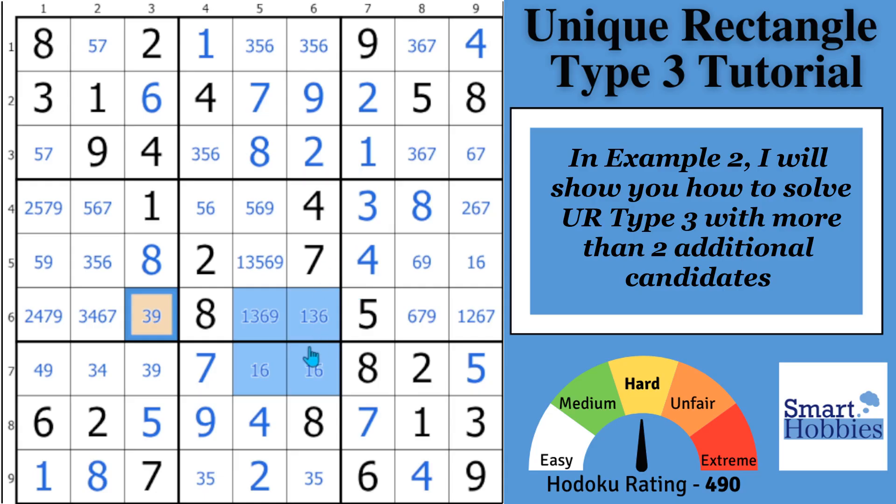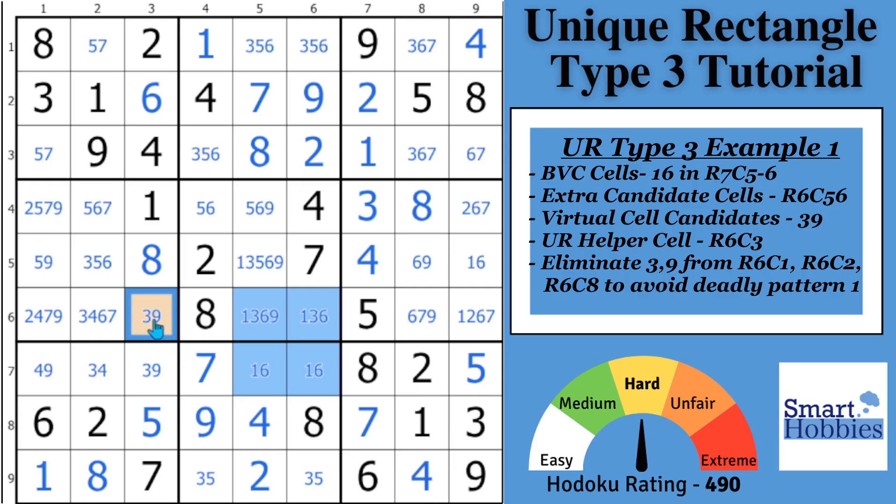In my next example, I will help you work through an example where there are more than two additional candidates. It's a little bit more complicated. Now, how do you make eliminations? You're going to remove a 3-9 from any cell in the same house as these three cells. In this case, this is row 6. Because you know one of the 3-9 has to be here, one of the 3-9 has to be here to avoid the deadly pattern, you can eliminate a 3 or 9 from any other cell in the row. You can remove a 3 from there and you can remove a 9 from here and a 9 from here. And once you do that, you'll notice now there's only one place to put a 9 in block 6. So you can solve this for a 9, you can solve this for a 5, and you'll be able to make many more solves in this puzzle and solve it completely.